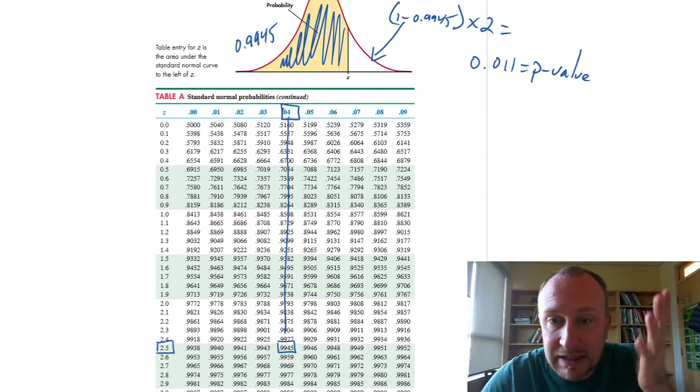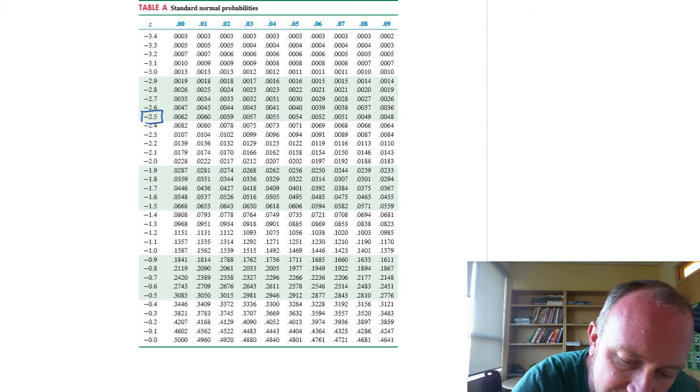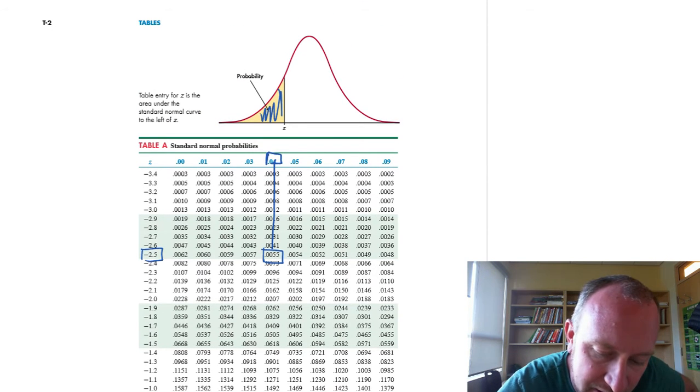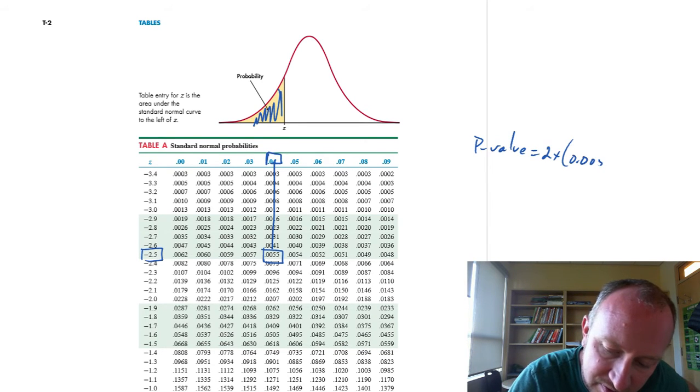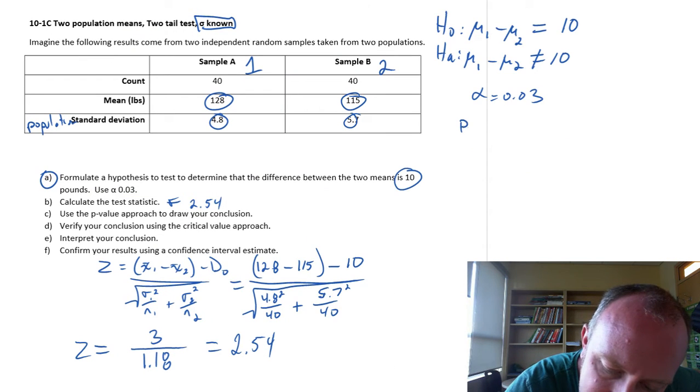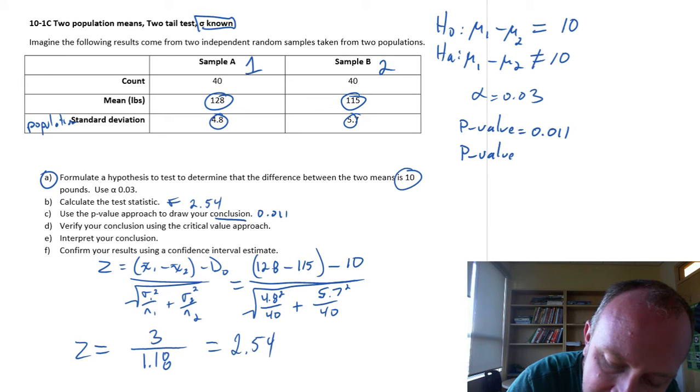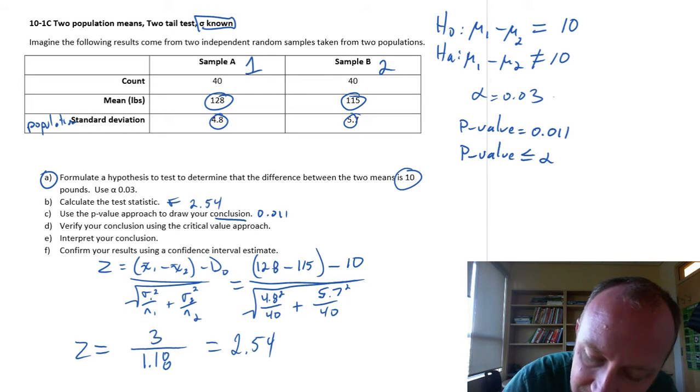And just again to be consistent, we can always go to the negative side and look up negative 2.54. That gives us a value of 0.0055 in this end. And so that p-value is 2 times 0.0055, which is going to be the same as we had before, 0.011. So coming back to our problem, we have our p-value of 0.011. So that allows us now to, at that level of significance, remember we reject if the p-value is less than or equal to alpha. Alpha here is 0.03.